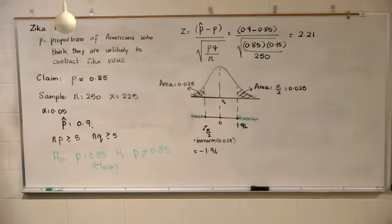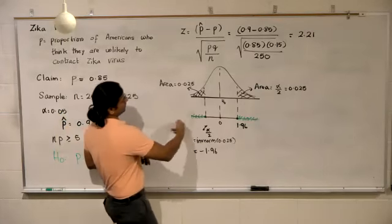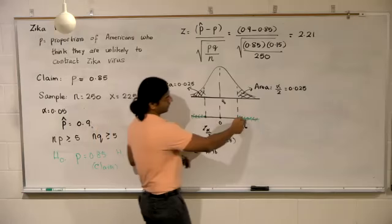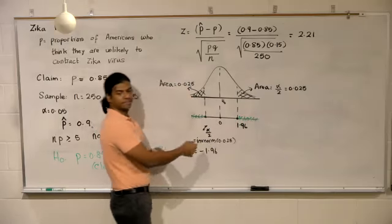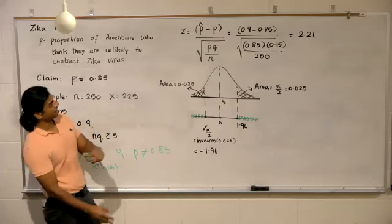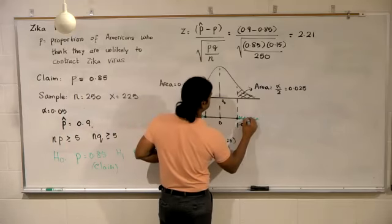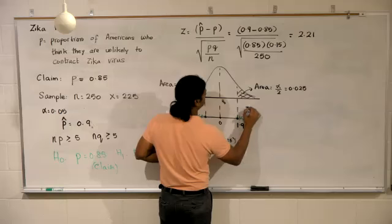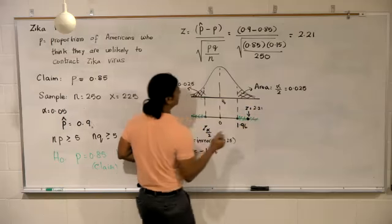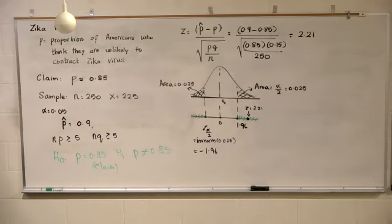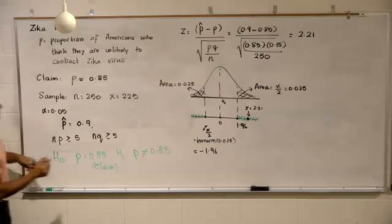So if the test statistic falls either on this side over here, or on that side, we reject the null. Where does it fall? In the rejection region. Should we reject the null? Yes.